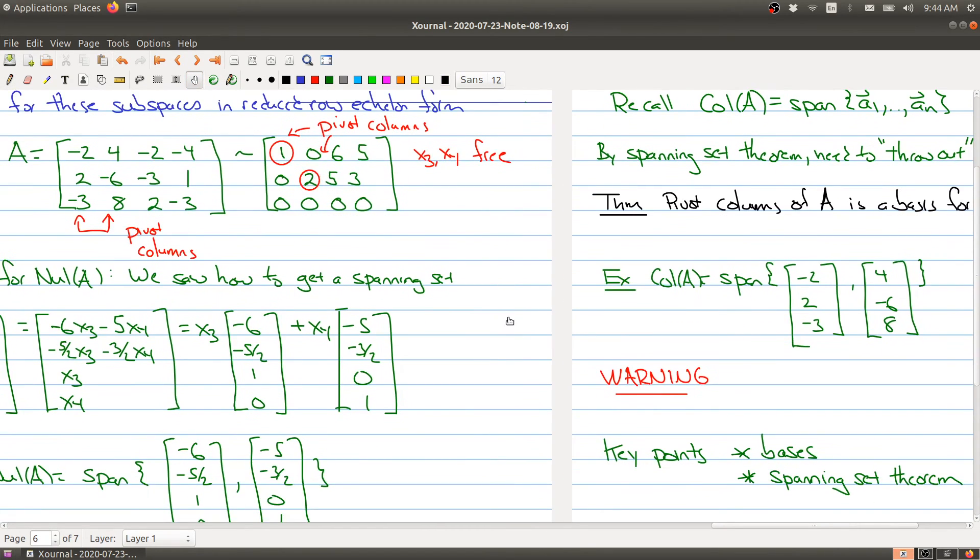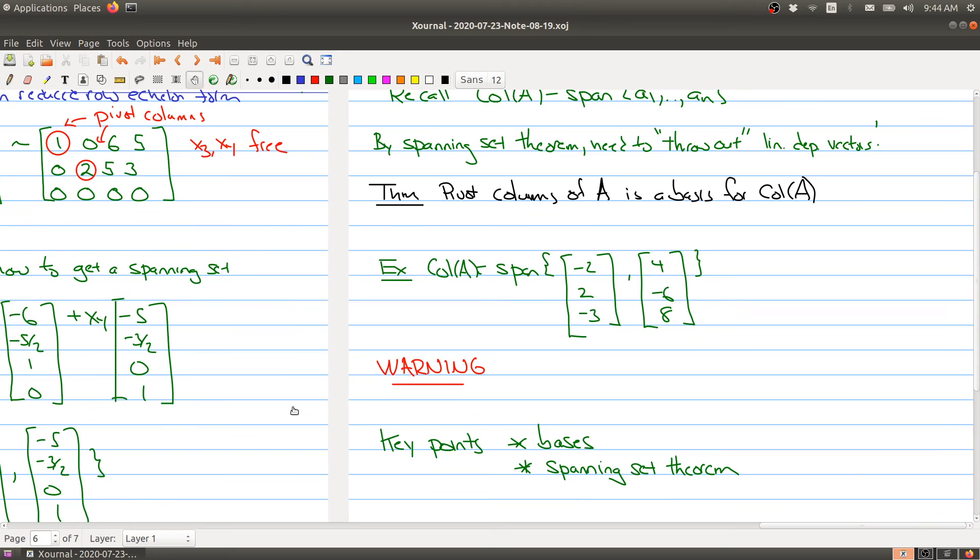Let me reemphasize with a bright red warning: you use the columns of A, not the columns of the reduced row echelon form. Pay attention to that.